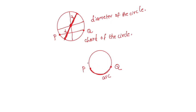A piece of a circle between two points is called an arc. What is PQ? PQ is an arc — PQ is a piece of the circle between two points. The larger arc is called the major arc.